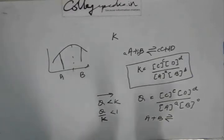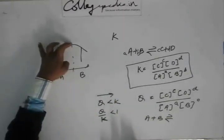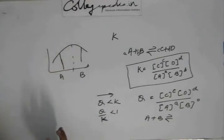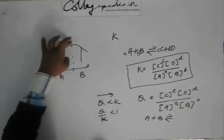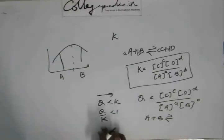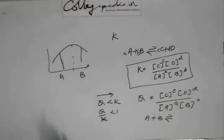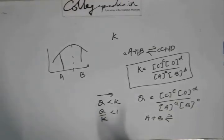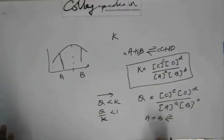If Q has increased more than K, then the reaction will come back to the equilibrium peak. If Q is less than K, the reaction moves forward to reach the peak. So: if Q/K is less than 1, the reaction goes forward; if Q/K is greater than 1, the reaction moves backward; and if Q/K equals 1, the reaction is at equilibrium and will not proceed further.